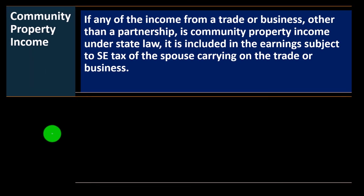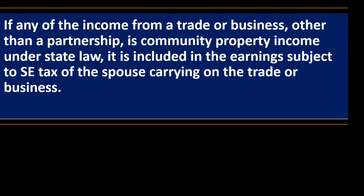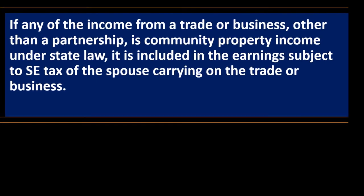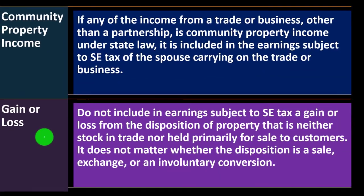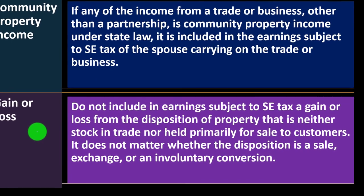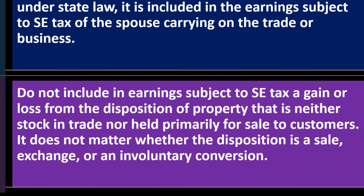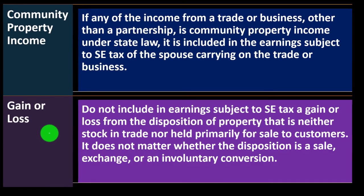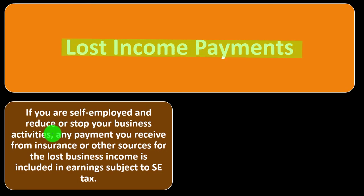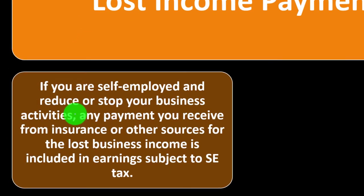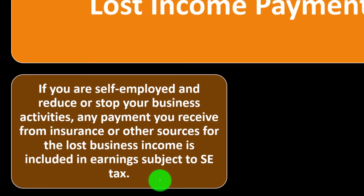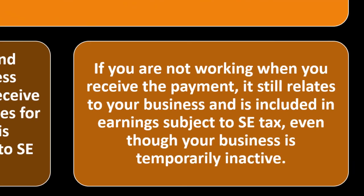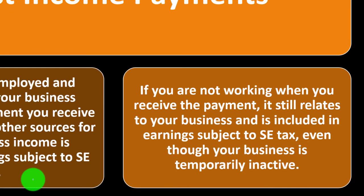Community property income: if any income from a trade or business other than a partnership is community property income under state law, it is included in the earnings subject to self-employment tax of the spouse carrying on the trade or business. Gain or loss: do not include a gain or loss from the disposition of property that is neither stock in trade nor held primarily for sale to customers, regardless of whether the disposition is a sale, exchange, or involuntary conversion. Lost income payments: if you are self-employed and reduce or stop your business activities, any payment from insurance or other sources for lost business income is included in earnings subject to self-employment, even if you are not working when you receive it, as long as it relates to your business.